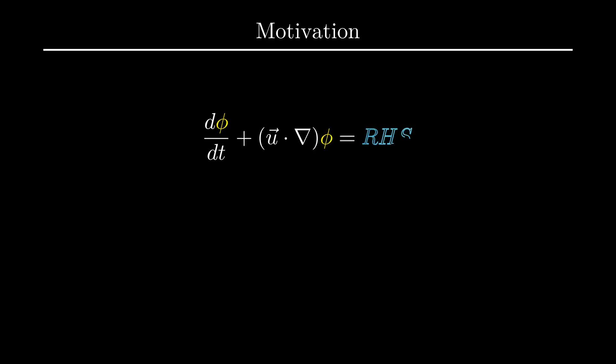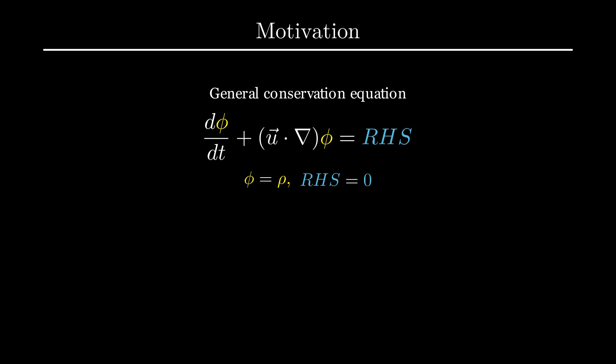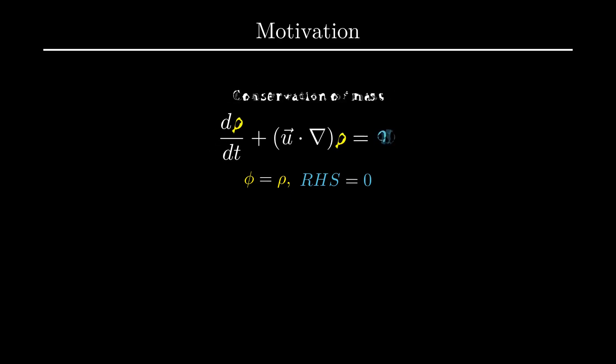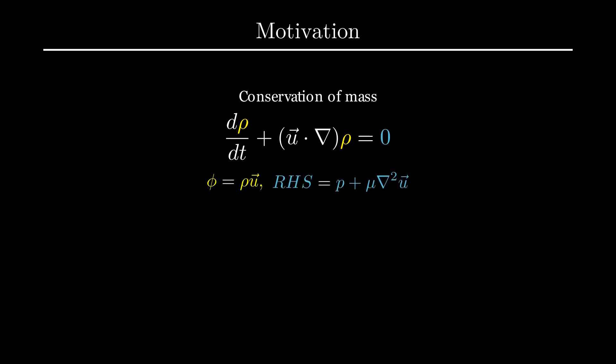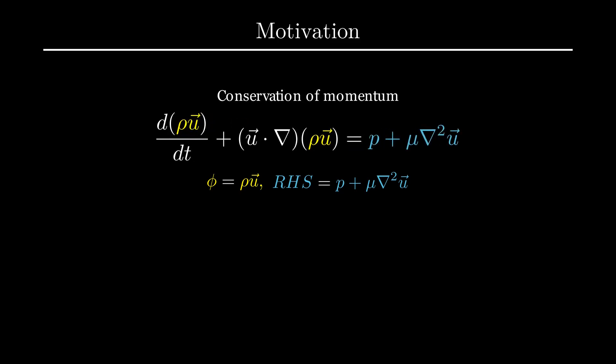But what if we were solving something more complicated? Suppose we were solving some fluid dynamics equations, which in general will take this form. This equation is very general, so depending on what we replace phi with and what we set as the right-hand side, the equation represents conservation of a different quantity. For example, mass conservation looks like this, and momentum conservation looks like this. The point is that we need a general method of solving equations that include a time derivative, regardless of what the rest of the equation looks like.